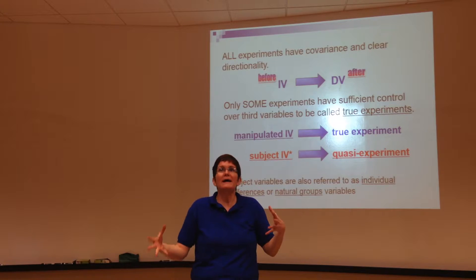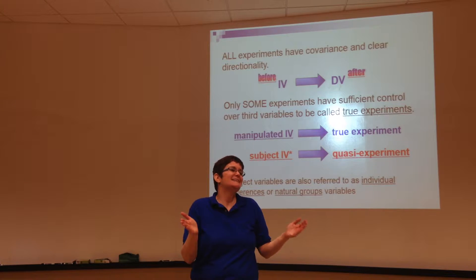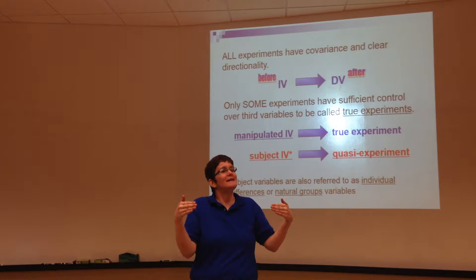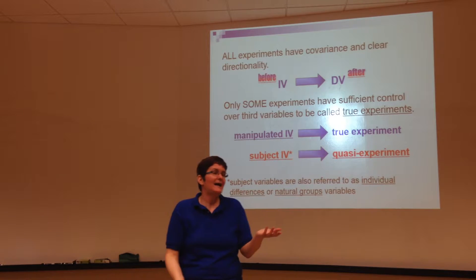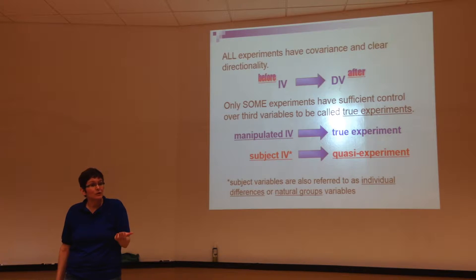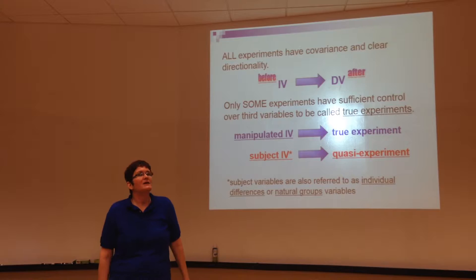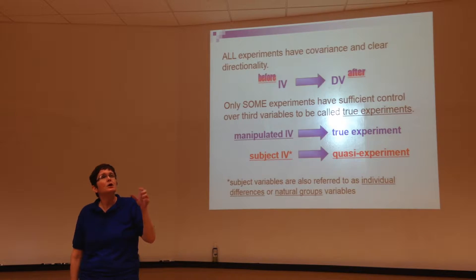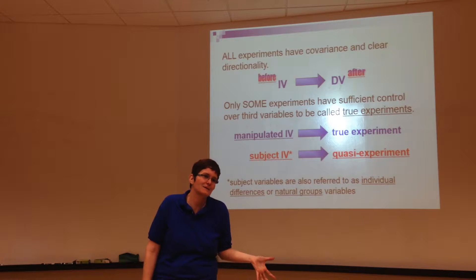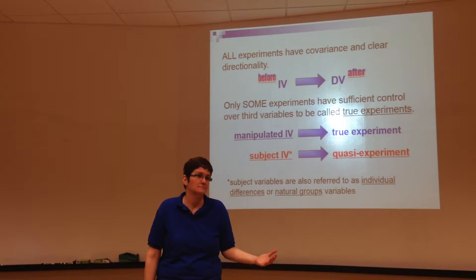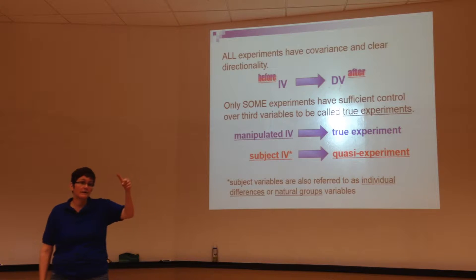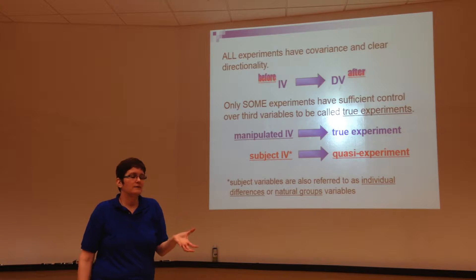By making internal validity better, you make external validity worse — it's always a trade-off. And if you're looking at naturally existing groups, chances are you're really interested in external validity, but it means your internal validity will be weaker. Quasi-experimental studies are making association claims — people really want to read them as causal claims because they're experiments, but they can't say that because there are too many things that aren't controlled. They have the first two criteria — covariance and time-order relationship — but they don't have the absence of third variables.